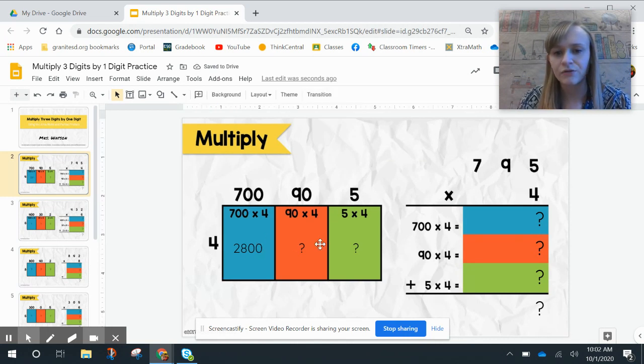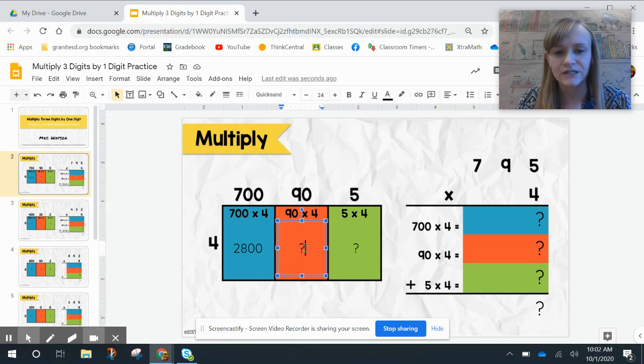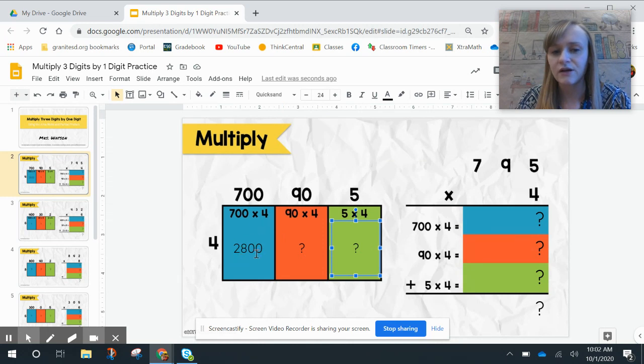Okay, and I go throughout, and everywhere there's a question mark, I should be typing an answer. So you're going to type an answer here and here. Now, where there's the colored part, it also has your adding over here on the side. So you're going to take that 2800, and you're going to add it.